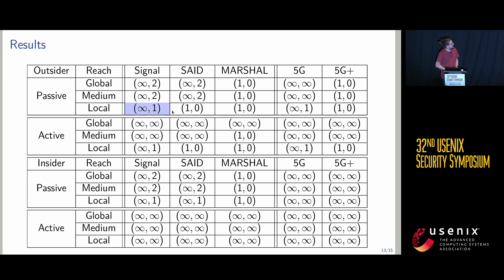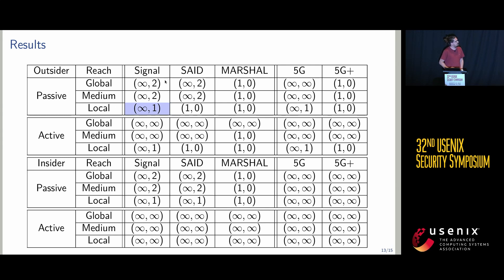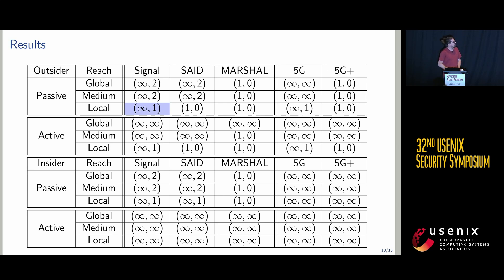Here are the results for all the protocols we analyzed. We did this for each adversary case, and of course there are some implications between cases. What is interesting are the extreme values: infinity-infinity means no PCS — all stages are compromised every time. The best PCS metric is 1-0, meaning only one stage is assumed to be compromised. We have some in-between values as well.